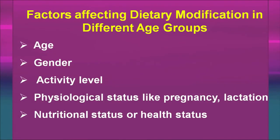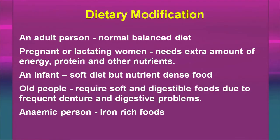What are the factors that affect planning for dietary modification? Age, gender, activity level, and physiological status like pregnancy and lactation. These are natural changes in physiological status, nutritional status, or health status. An adult person requires a normal balanced diet, but with changes in these factors, there are some adjustments needed. During pregnancy or lactation, there is a need for an extra amount of energy, protein, iron, folic acid, and other nutrients.